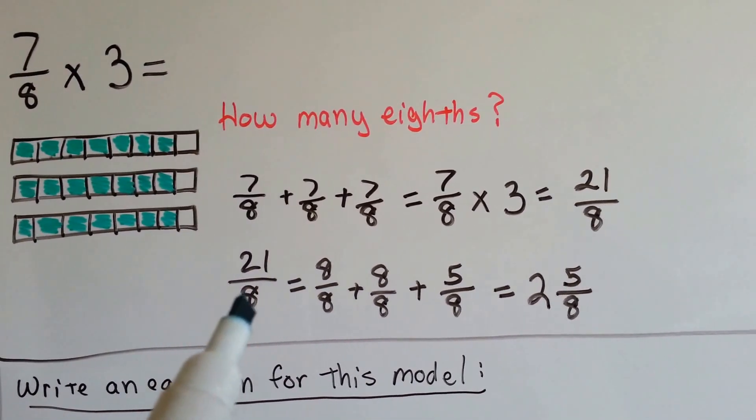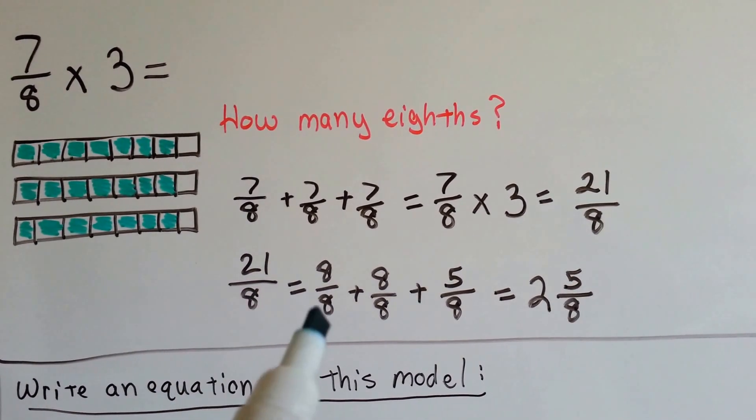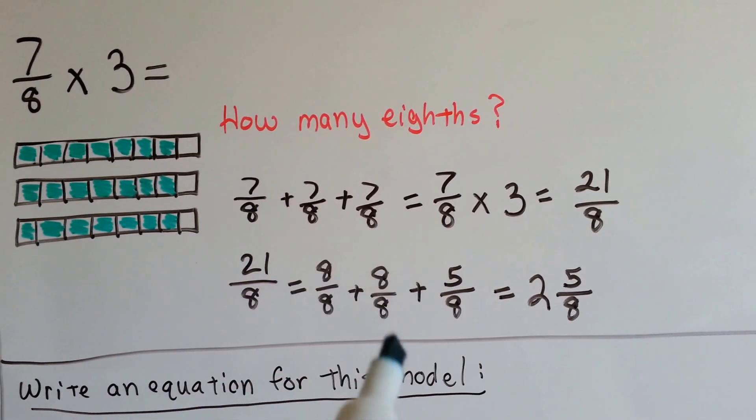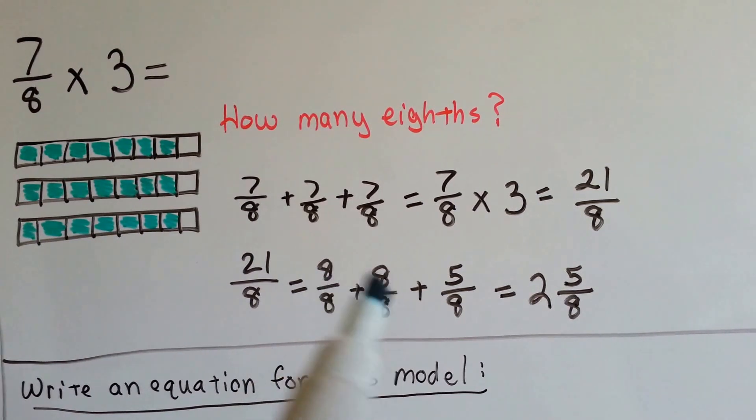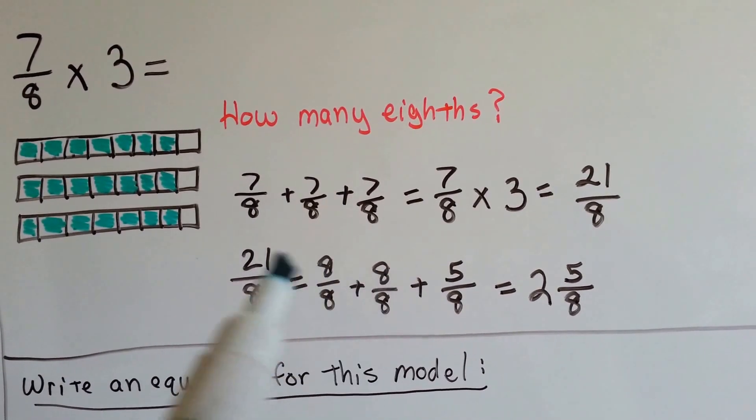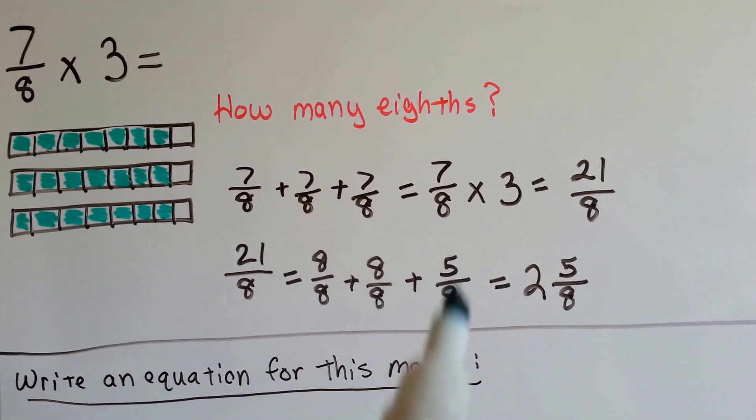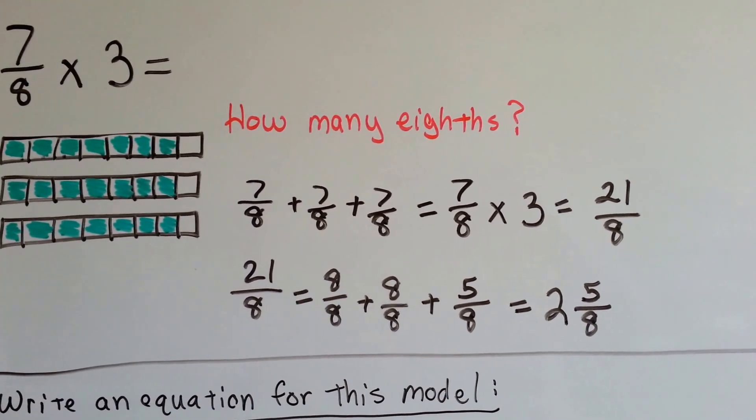Now that's an improper fraction, and we need to simplify it. How many eight-eighths can we pull out of it? One eight-eighths and another eight-eighths would be 16-eighths. We still have five to go. So that means we have two and five-eighths as our answer when we simplify it.